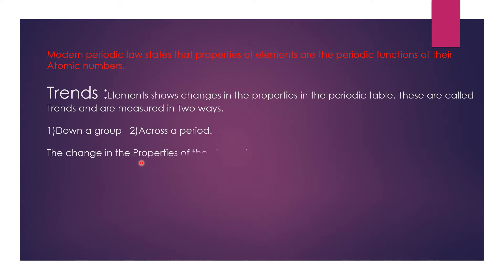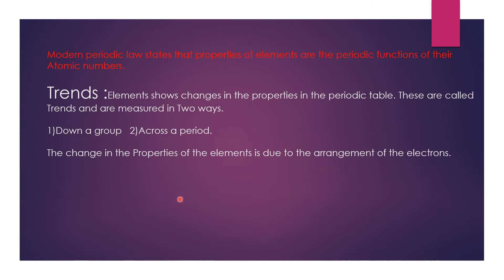Why do the properties of elements change? The change in properties of the elements is due to the arrangement of the electrons. The arrangement of electrons in various shells will decide the properties of the elements. Let us now discuss the important properties we are going to measure in the periodic table.